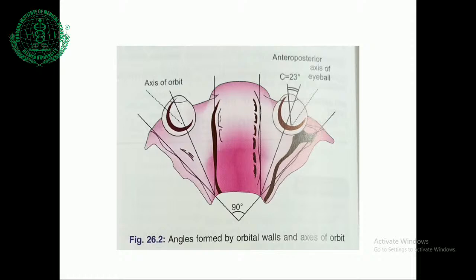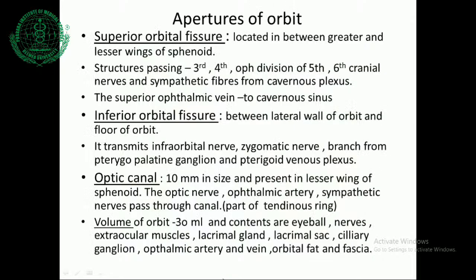This figure shows the orbital walls. The two medial walls are parallel to each other, while the lateral walls make an angle of 90 degrees. Regarding apertures: the superior orbital fissure is located between the greater and lesser wing of the sphenoid. Structures passing through it are the third, fourth, ophthalmic division of the fifth, and sixth cranial nerves, along with sympathetic fibres from the cavernous plexus. The superior ophthalmic vein also passes to the cavernous sinus. The inferior orbital fissure transmits the infraorbital nerve, zygomatic nerve, branch from the pterygopalatine ganglion, and pterygoid venous plexus.